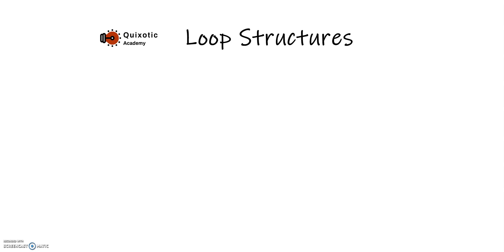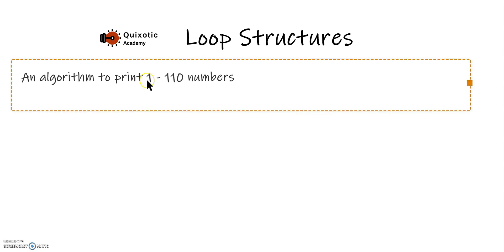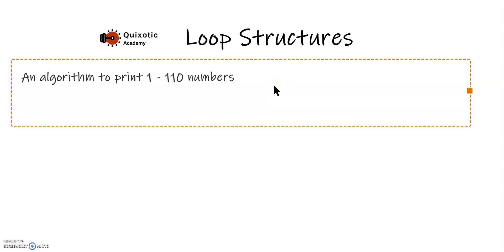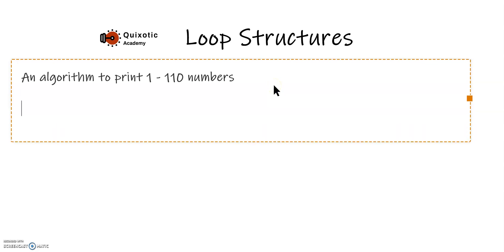This video is part of a series covering IGCSE computer science topics. In this video we will discuss loop structures. Let's suppose we have to write an algorithm to print 1 to 100 numbers — let's write a pseudocode to solve this problem.